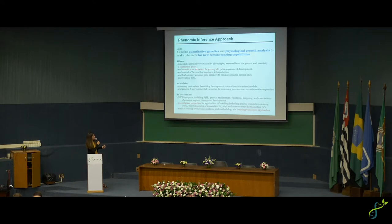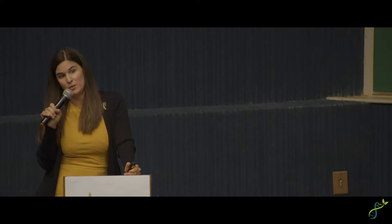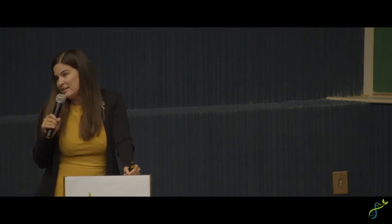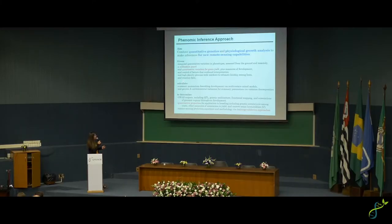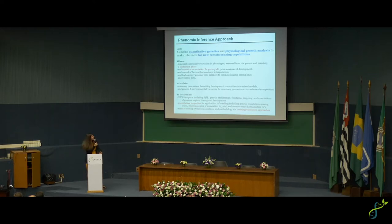You need temporal quantitative variation in phenotypes assessed on the ground and remotely, a calibration panel for training and cross-validation, quantitative variation for grain yield, and measurements of phenology. In any crop, there's usually a variable you want to control for that will swamp all your signals. In soybean it's maturity; in maize it might be height. You also need genome-wide markers for variance decomposition to get genetic correlation to yield.